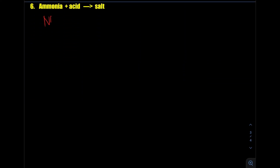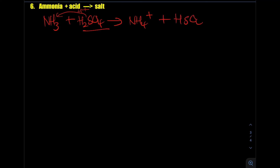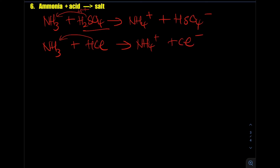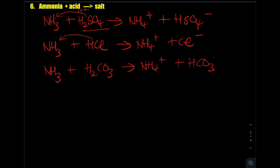The last type is ammonia — NH₃ — bonded with an acid. Ammonia is a base. With hydrogen sulfate acid, the acid donates a proton to NH₃, forming NH₄⁺ (ammonium ion) plus HSO₄⁻. With HCl, it gives NH₄⁺ plus Cl⁻. With carbonic acid (H₂CO₃), it gives NH₄⁺ plus HCO₃⁻ — the bicarbonate ion. In each case the acid donates a proton to ammonia forming the ammonium ion.